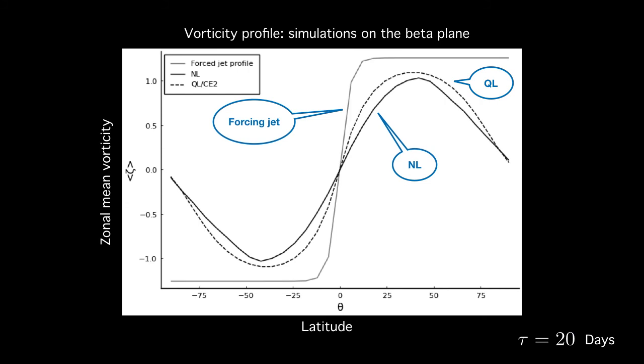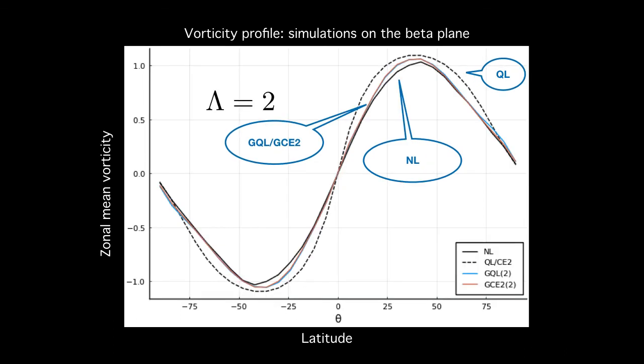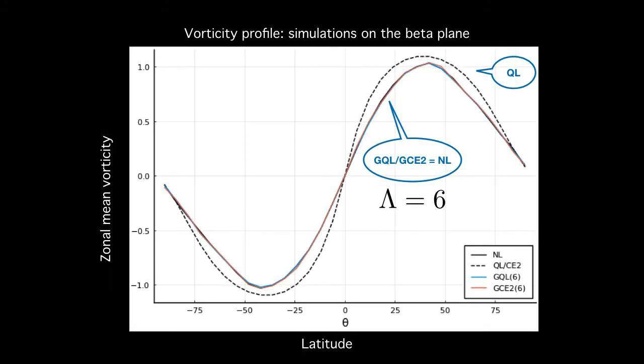On the beta plane, I show vorticity profiles. Now, as expected, again, QL under or over estimates the vorticity due to a steeper vorticity gradient prediction at the equator than the corresponding NL. So these simulations are done at a resolution of 10 over 16, 10 being the resolution in the zonal direction. So these are small simulations, as I said, just for a proof of concept. Again, at a small value of lambda of 2, GQL gets the gradient at the equator right, and also at the high latitudes, and at a further increased cutoff wave number, which is still significantly less than the highest resolution, GQL and GCE2 to get the NL dynamics and predict the correct zonal mean vorticity profile.